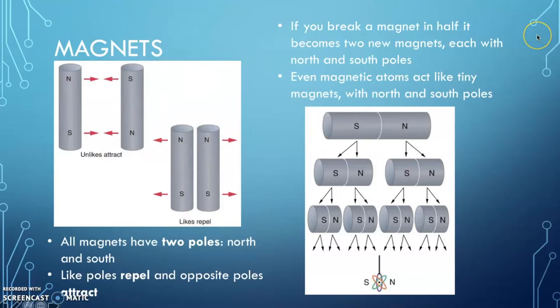And then also I wanted to say that if you break a magnet in half, it's not like, oh now you have a south pole and just a north pole magnet. But you actually have two new magnets, each with their own south and north pole. So you break one into two, then you break two into four, and so on, even down to the tiniest little atom. And these magnetic atoms each act like tiny little magnets and have their own north and south poles.